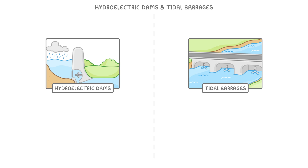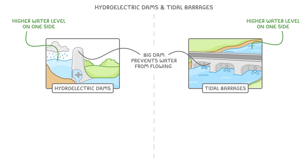The first thing to know is that both of these systems work in basically the same way. There's a big dam that prevents water from flowing like it should, and so we get a much higher water level on one side than the other. The only difference between the two is what causes the difference in water levels.